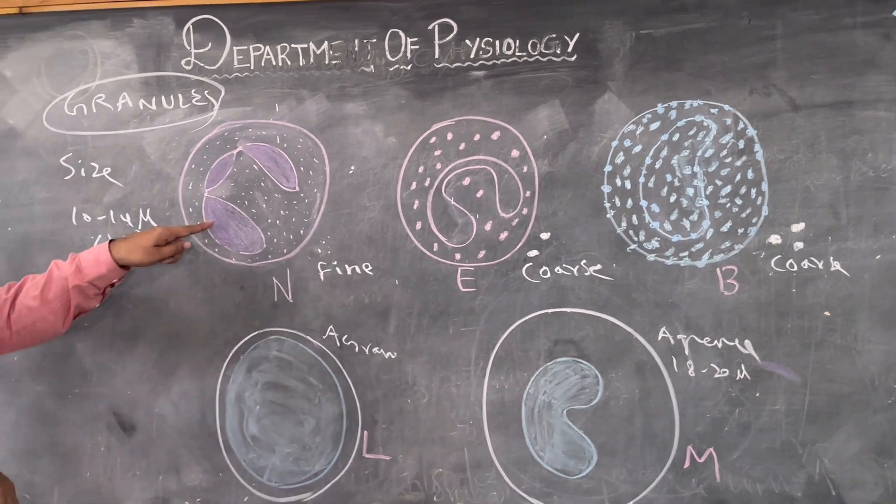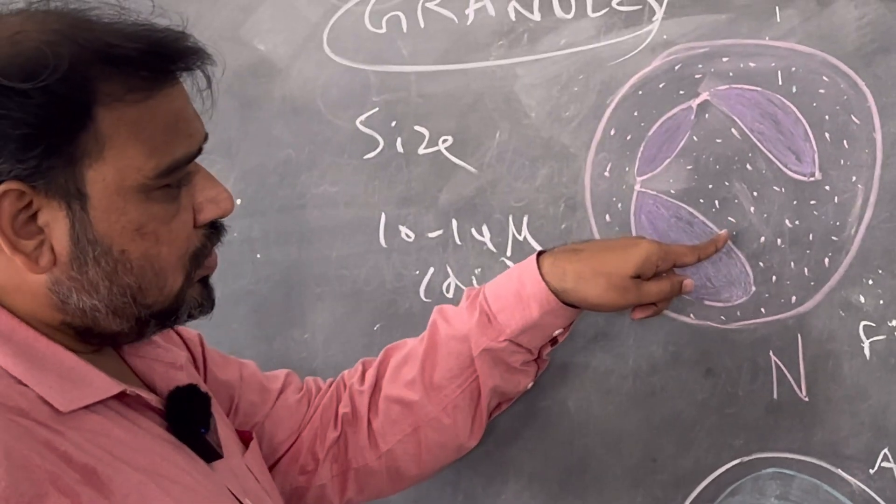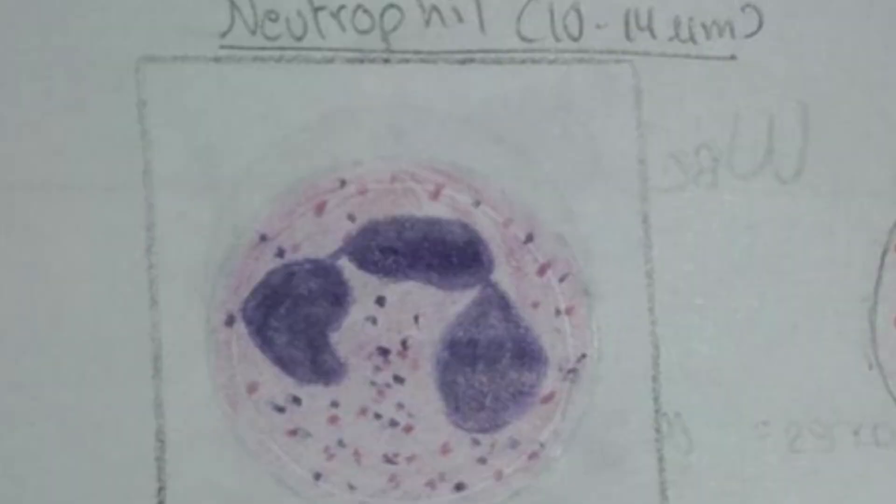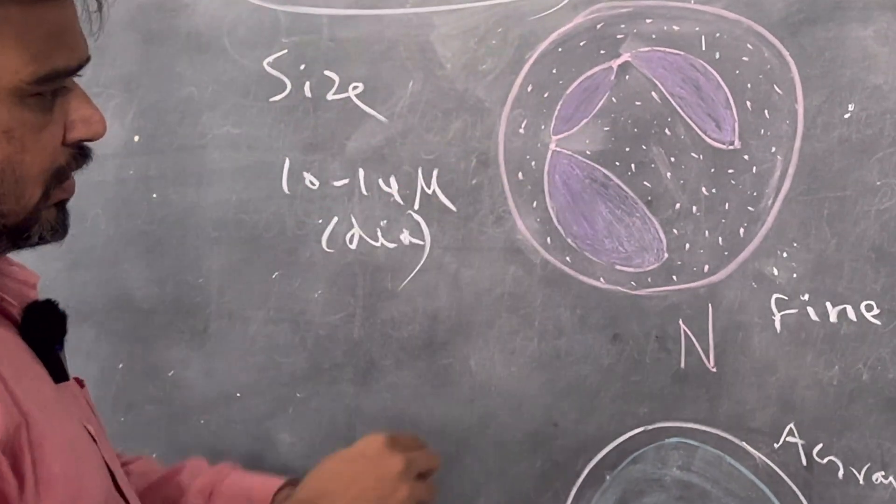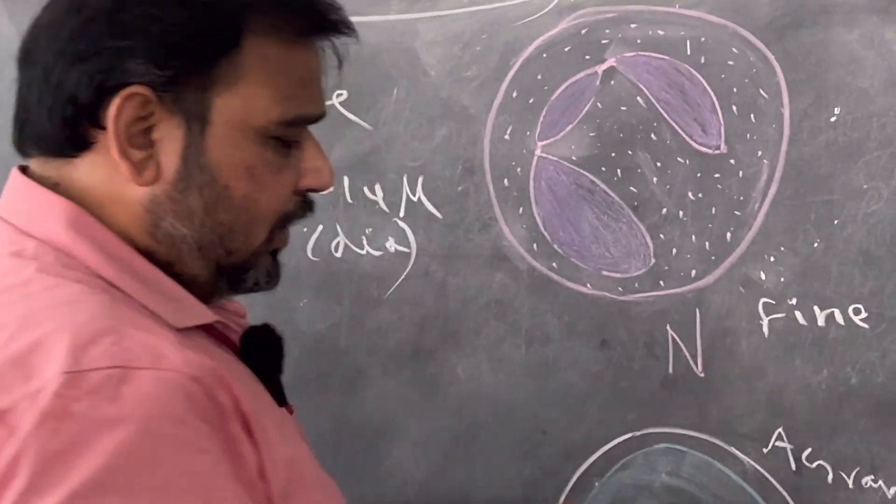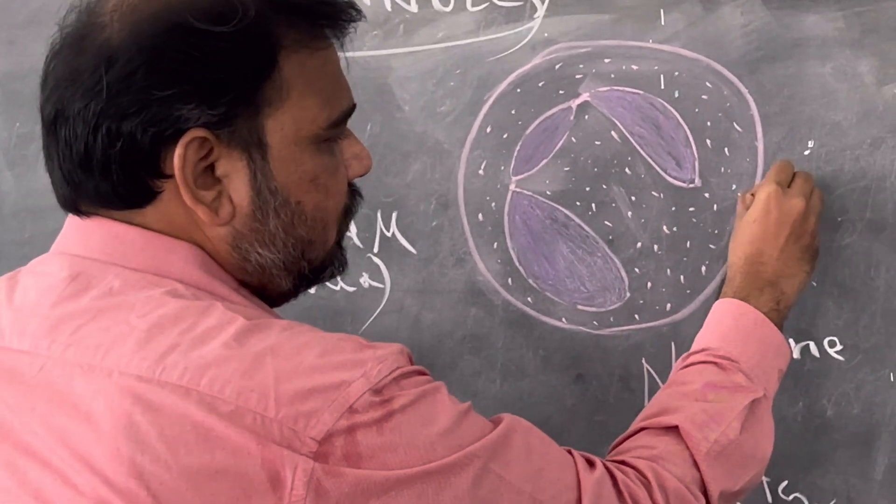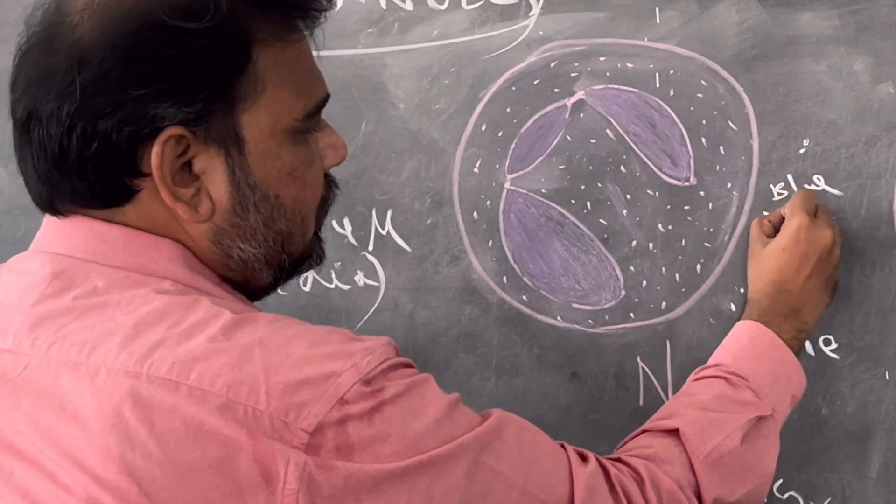Now coming to the color. Just see here I have used both blue color as well as pink color, that is why it is neutral. Neutral means it takes both eosin stain as well as hematoxylin stain from the Leishman stain. So when drawing you put fine dot and try to use both blue color as well as red color, very very important. So it takes both blue and red.